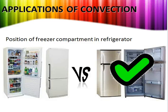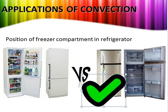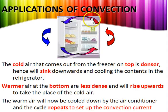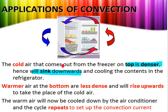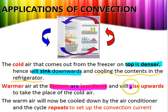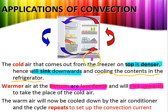The same applies to your refrigerator. We tend to put the freezer at the top — why? The cold air from the freezer is denser, so it will sink downwards, cooling the contents in the refrigerator. The warmer air at the bottom is less dense, so it will rise upwards and be cooled down by the freezer, and the cycle repeats. This cycle is what we call the convection current. Whenever you describe convection, you must always talk about the convection current.